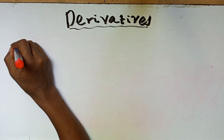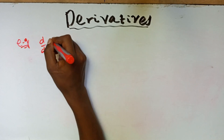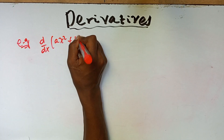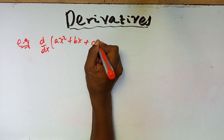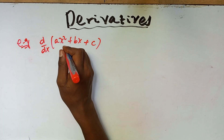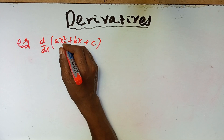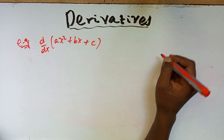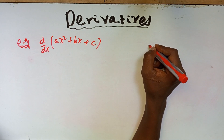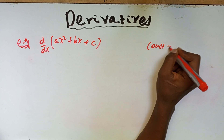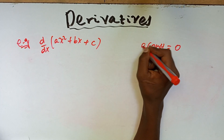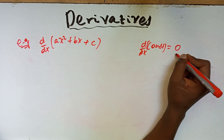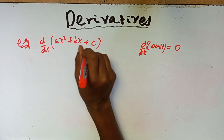Let's take an example and solve it. Find the derivative with respect to x of ax squared plus bx plus c. When we differentiate this, we have to reduce the degree of x by one. Also, we have to remember that the derivative of a constant number is always zero.